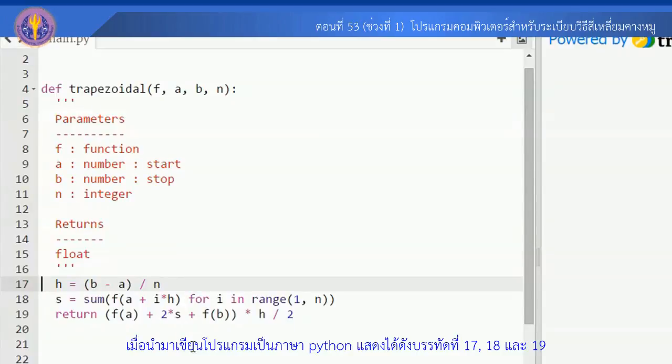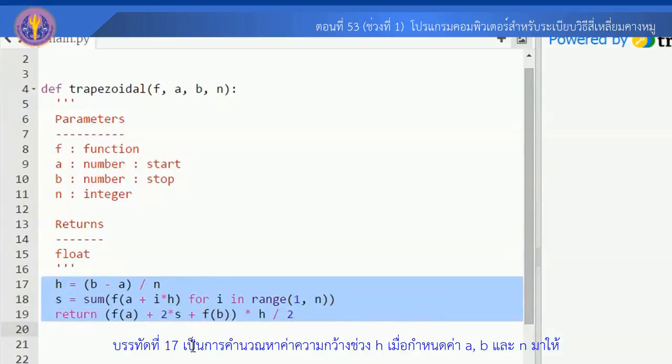สำหรับสูตรของระเบียววิธีของรูปสี่เหลี่ยมคางหมู เมื่อนำมาเขียนโปรแกรมด้วยภาษา Python แสดงในบรรทัดที่ 17, 18 และ 19 บรรทัดที่ 17 เป็นการคำนวนหาค่าความกว้างช่วง H เมื่อกำหนดค่า